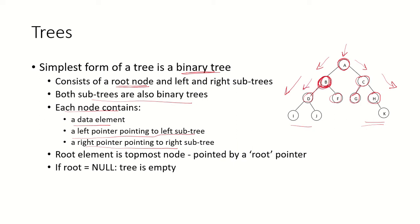Then a pointer to node D which is the left node, and a pointer to node F which is the right child. The root element is the topmost node and is pointed to by the root pointer. If root equals null, that shows the tree is empty.